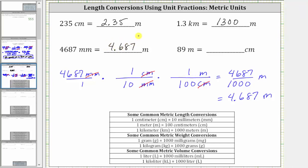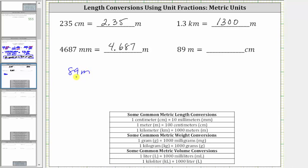For the last example, we want to convert 89 meters to centimeters. We write 89 meters as a fraction with a denominator of one. One meter is equal to 100 centimeters, and therefore this only requires one unit fraction. Because we want meters to simplify out, we have to have meters in the denominator and centimeters in the numerator. The unit fraction is 100 centimeters over one meter. Meters simplify out, and now we multiply; the units are centimeters. 89 times 100 is 8,900.